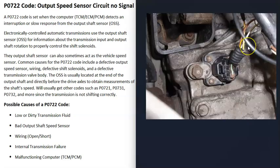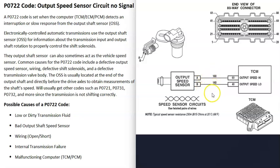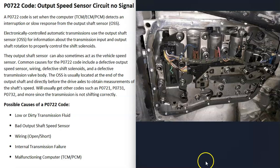The next possible cause is the wiring going to the speed sensor. If there's any problem with that wiring — like an open or short, or a connector that's not connected properly — that's going to cause problems. You can use a multimeter and get schematics for your vehicle to test the wiring and be sure there are no opens or shorts or anything like that.